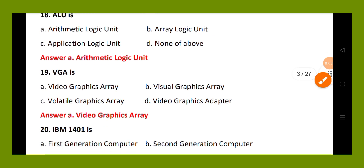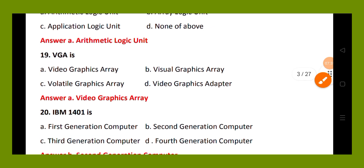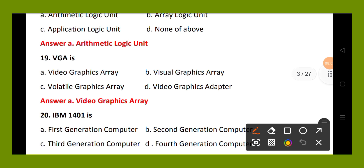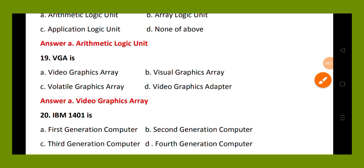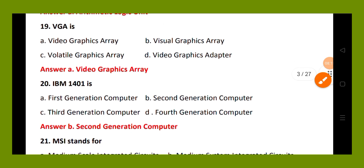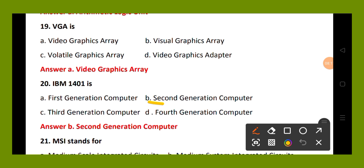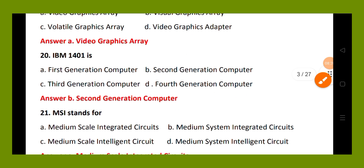Question number 20. IBM 1401 is: option A, first generation computer; option B, second generation computer; option C, third generation computer; option D, fourth generation computer. The right answer is option B, second generation computer.